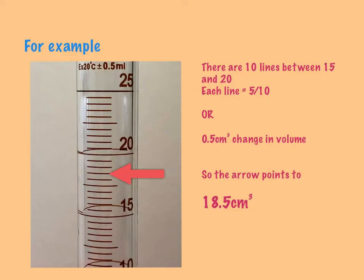So if I start down here, I see that I've got 15, 15 and a half, 16, 16 and a half, 17, 17 and a half, 18, and where the red arrow is—the big red arrow—is 18 and a half. I hope that's nice and clear.